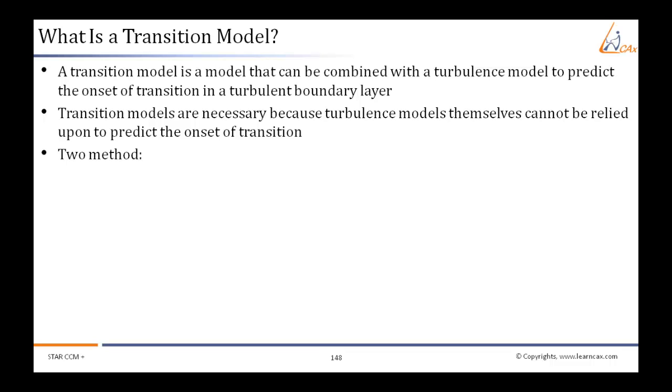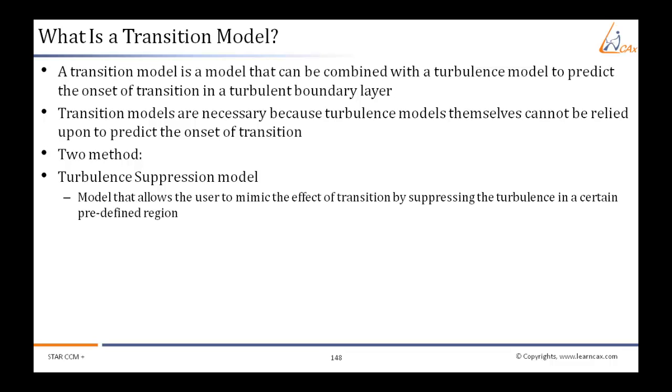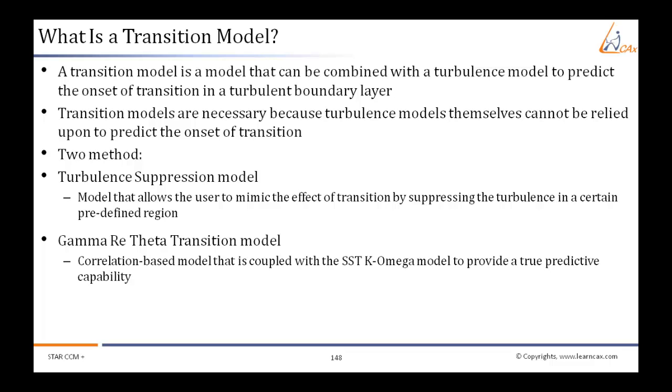In Star CCM+, two methods are currently available to account for transition: the turbulence suppression model, a model that allows the user to mimic the effect of transition by suppressing the turbulence in a certain predefined region; and the gamma Re-theta transition model, a correlation-based model that is coupled with the SST k-omega model to provide a true predictive capability.